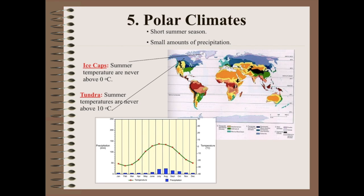The last climate zones are the polar climates, divided into ice caps and tundra. Ice caps are pretty much at the poles — very, very cold, with summer temperatures usually not above zero degrees Celsius. The tundra, however, is closer to the temperate deciduous forest or temperate cold climate, with slightly warmer summer temperatures. This would be northern Canada and Russia.